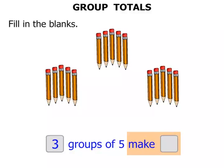So three groups of five make how many? In other words we need to count all of them now. One, two, three, four, five, six, seven, eight, nine, ten, eleven, twelve, thirteen, fourteen, fifteen. So three groups of five make fifteen.